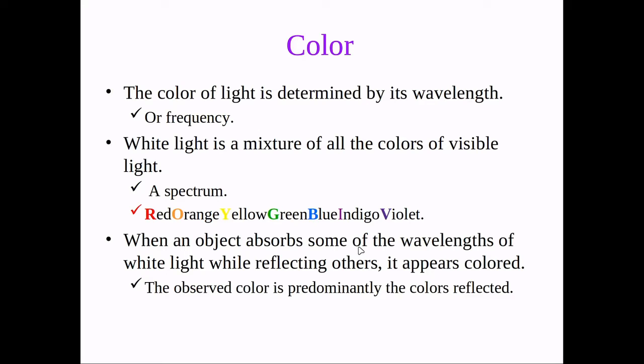When an object is colored, that's because it absorbed some of the wavelengths of white light and reflected others. The colors that it reflected merge together and that's what gives that object its overall color.